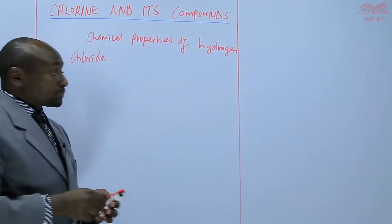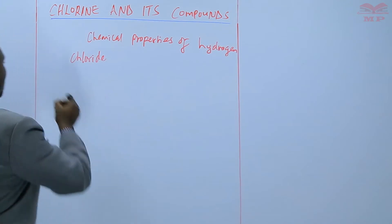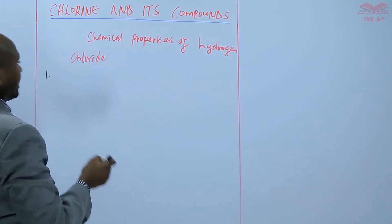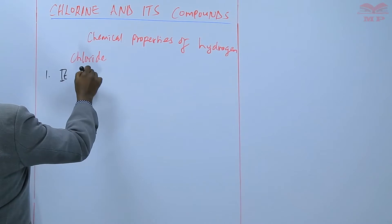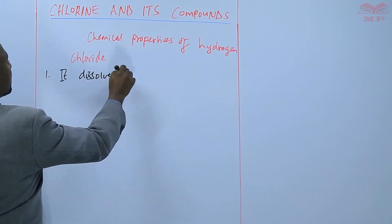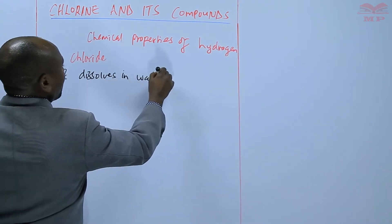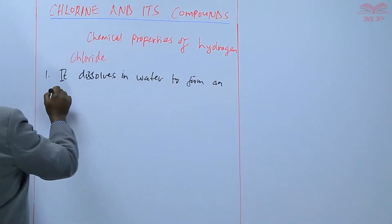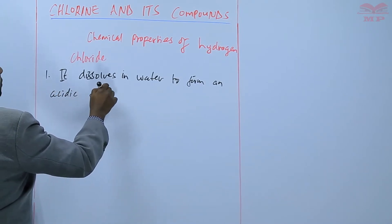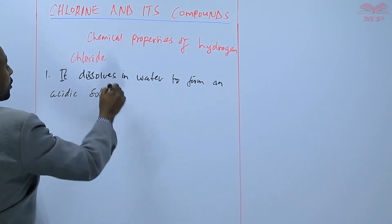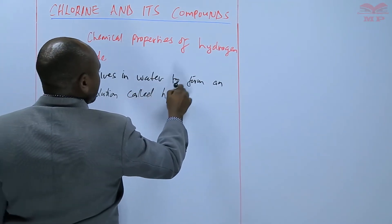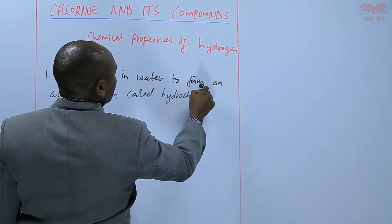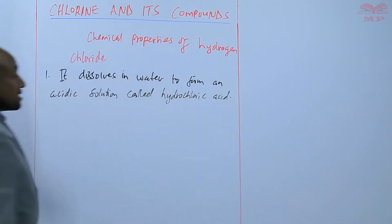One of the properties that we saw of hydrogen chloride is that it dissolves in water to form an acidic solution called hydrochloric acid. So hydrochloric acid is a solution formed when hydrogen chloride is dissolved in water.